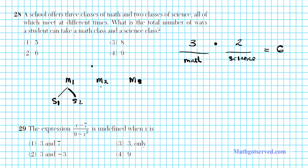And then M2, you have science one or science two. And then M3, you have science one or science two. So how many different combinations of classes can you have in this scenario? You can have M1 science one, M1 science two, math two science one, math two science two, or math three science one, math three science two.